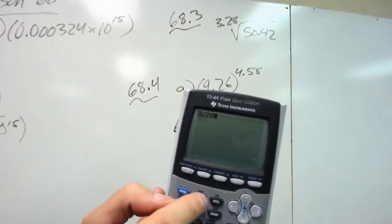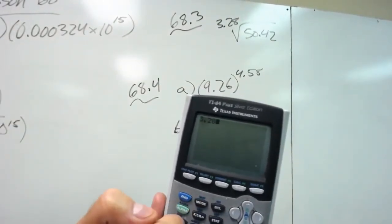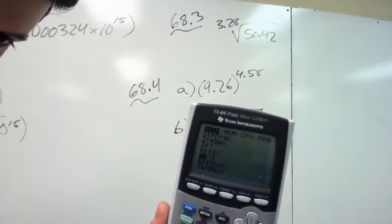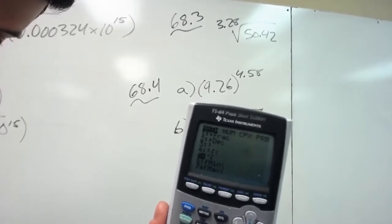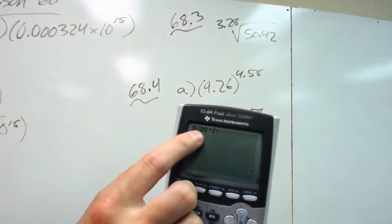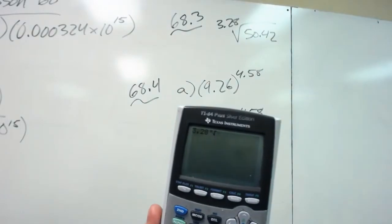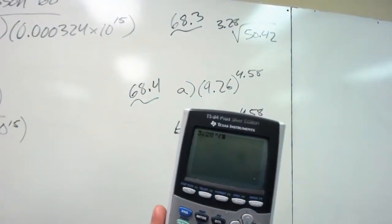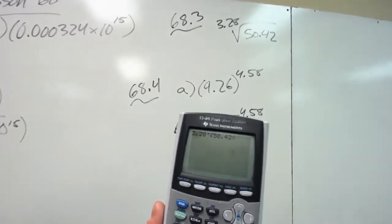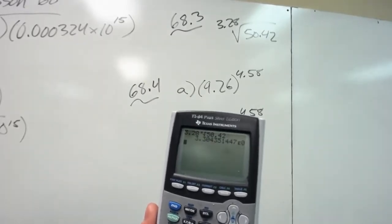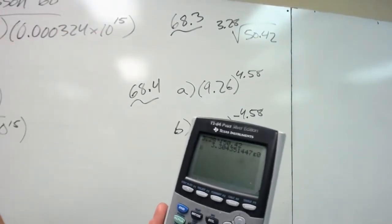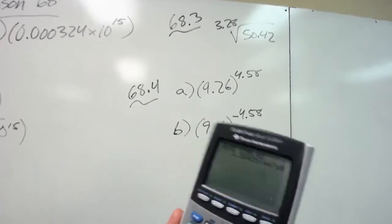From there, I push math. Where's math? Math. And if you look at the fifth spot, it gives the little X with the radical sign. Well, if I push enter, what we have basically said is the 3.28 is our square root, what we are square rooting by or whatever. Then I type in 50.42 inside, hit enter, and I get 3.304 and it gives that.